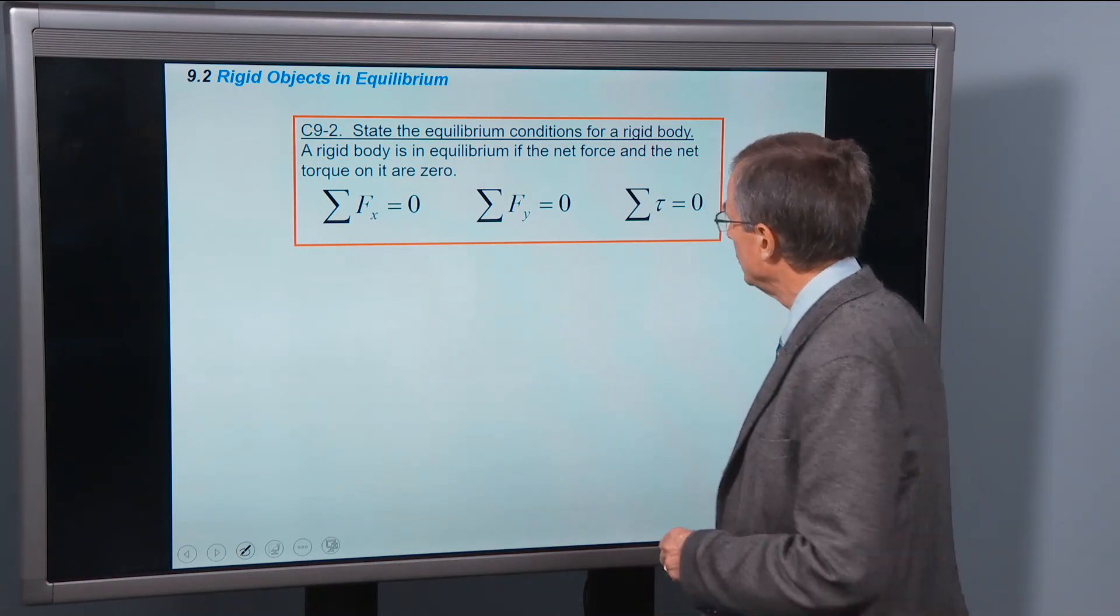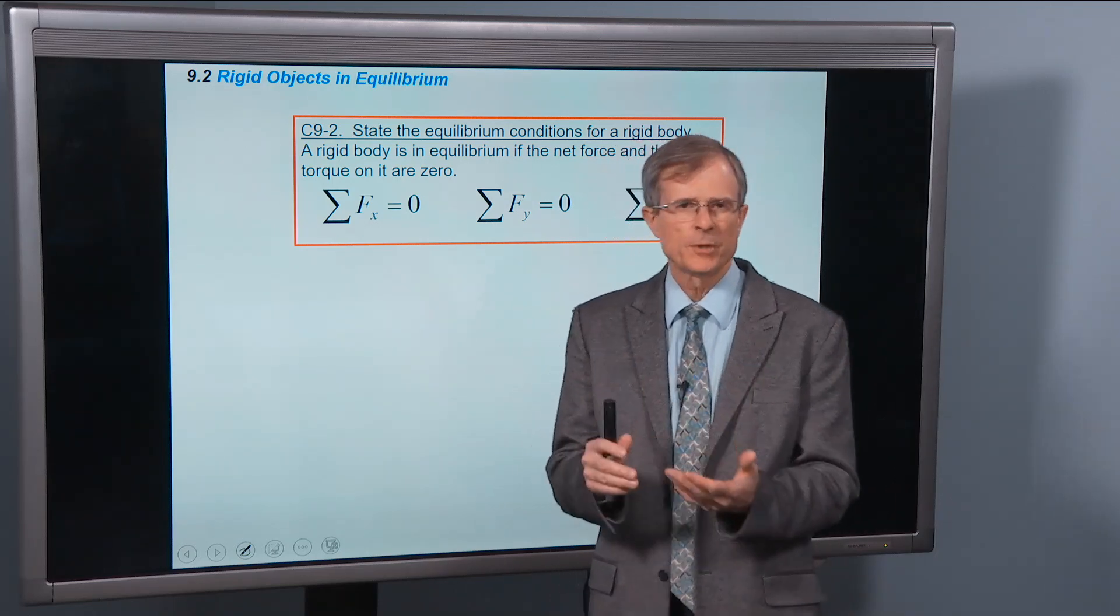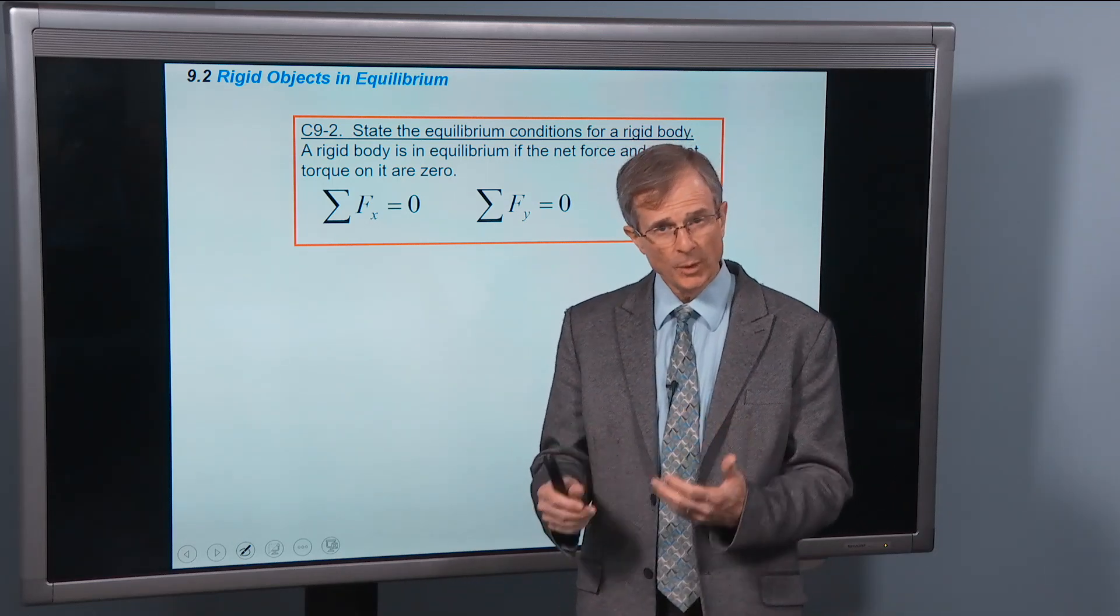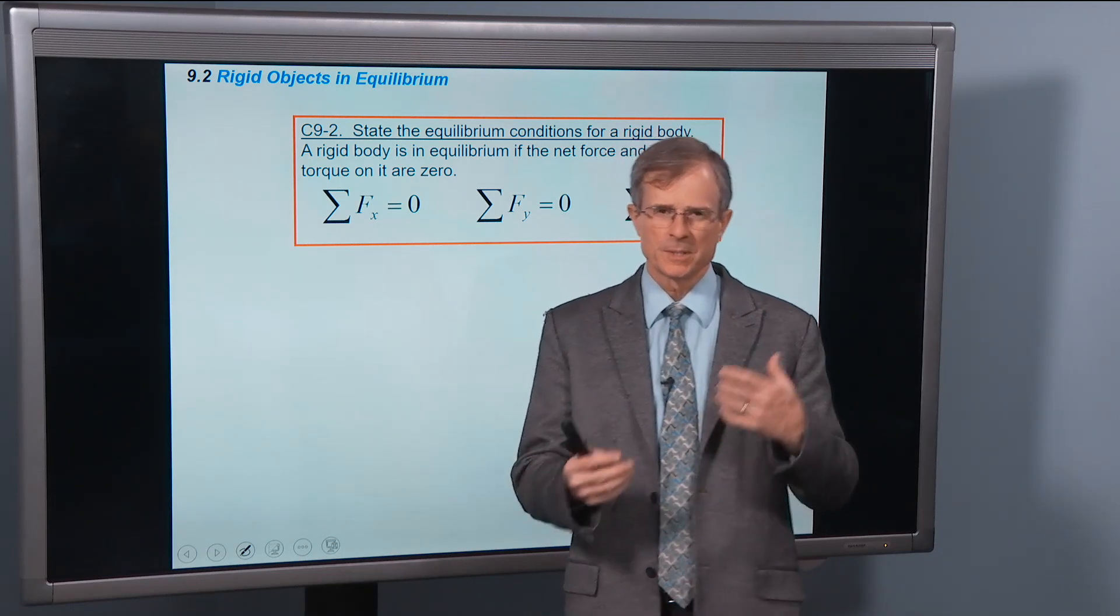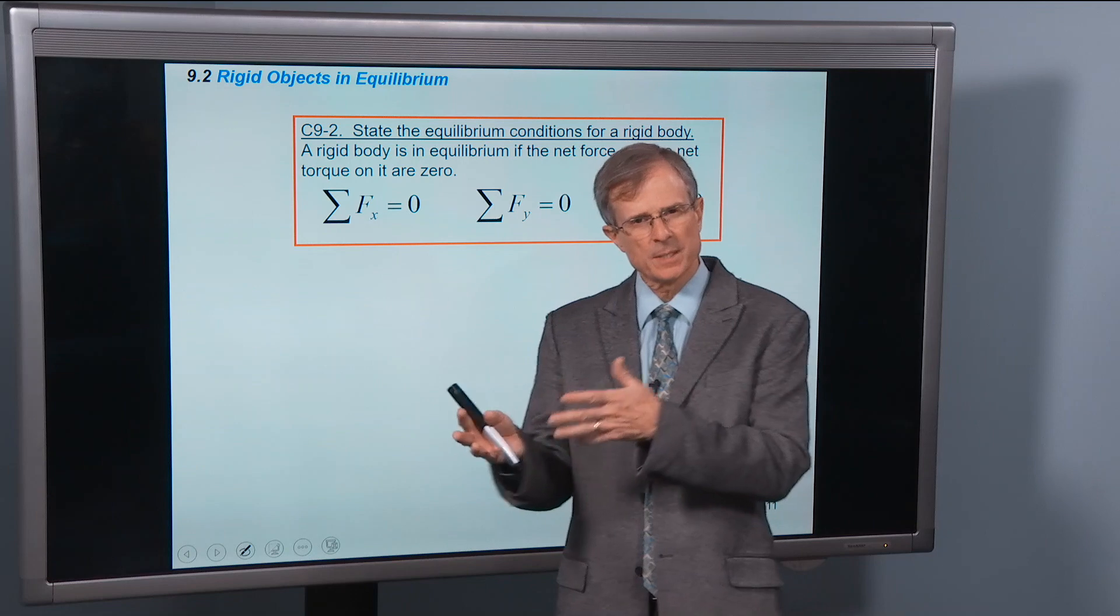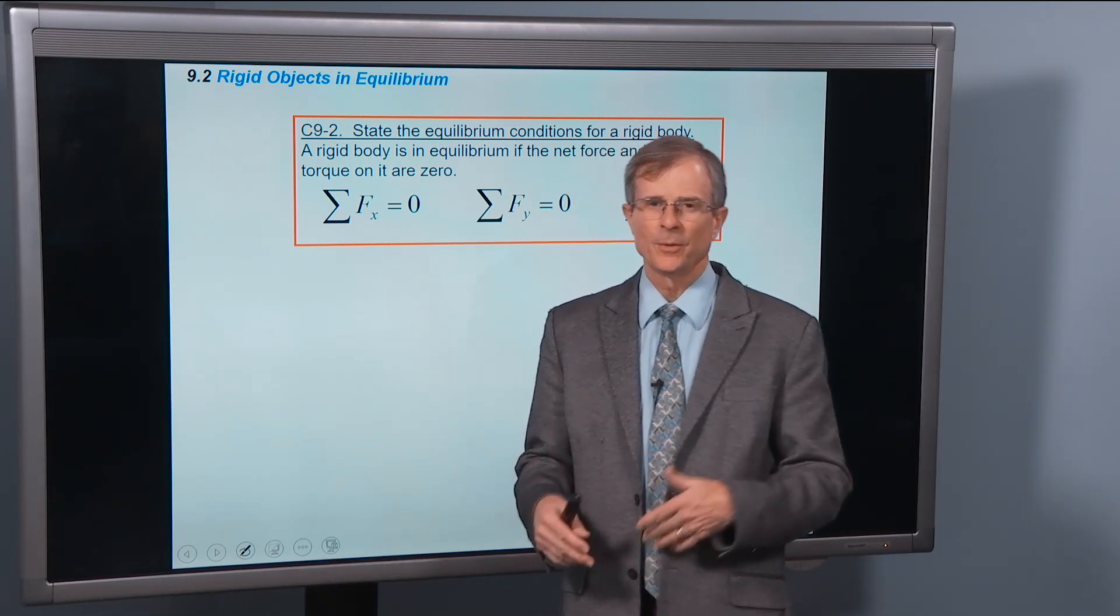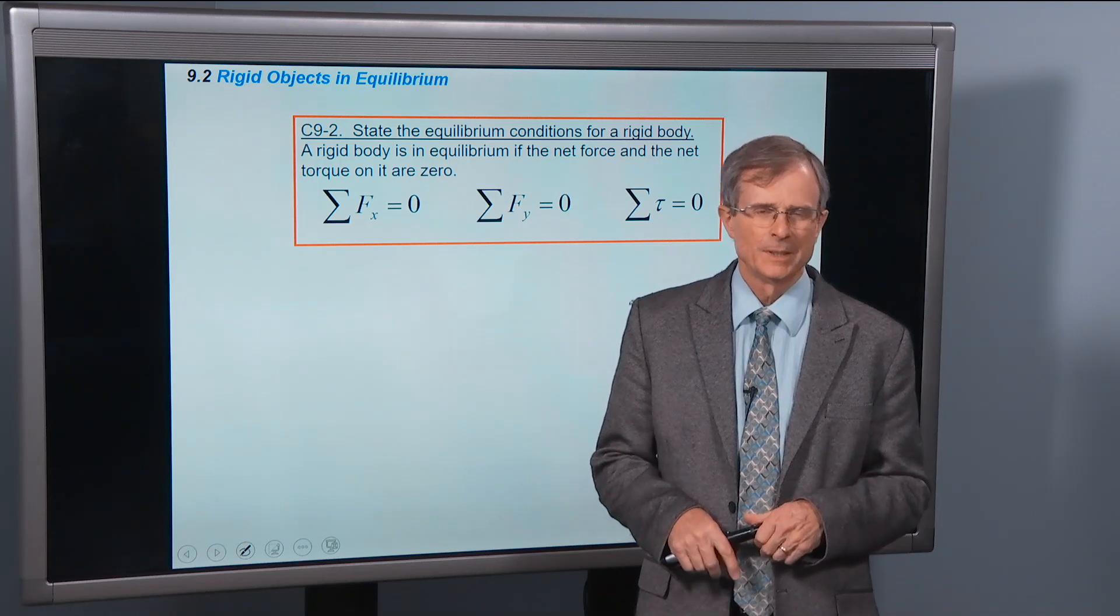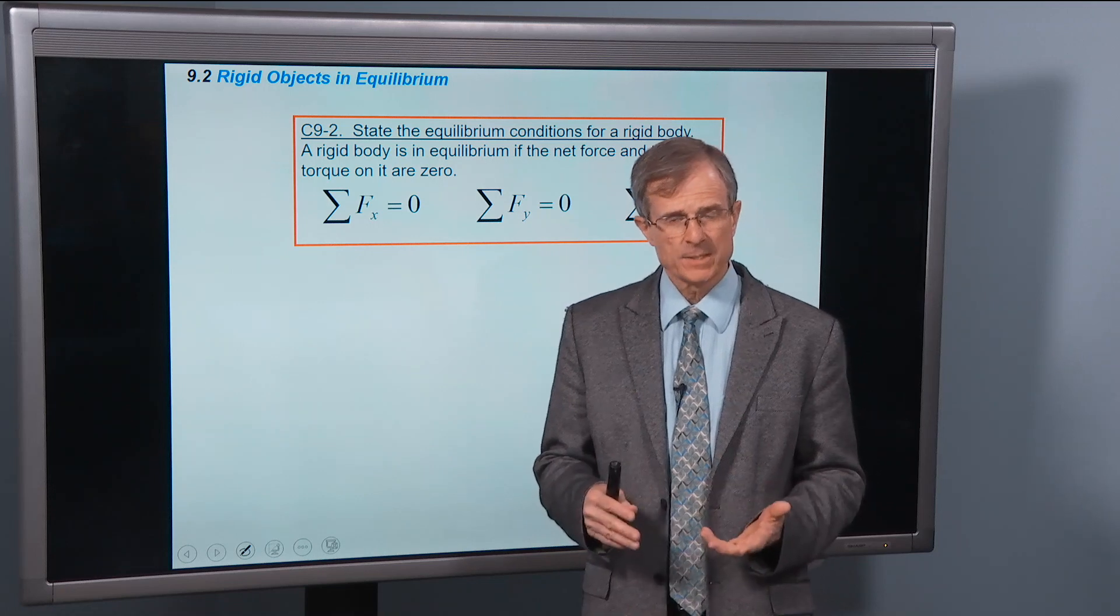We defined equilibrium to be when an object had no acceleration. Equivalently, if an object has no acceleration, since the net force equals the mass times the acceleration, the right-hand side of that equation is zero. Therefore, the left-hand side of the equation has to be zero. So there's no net force acting on the object. That's equilibrium.